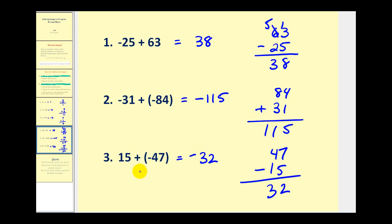So that's how you can add integers using the formal rules. But again, if this seems difficult, you may want to watch the video on using the number line to add integers, as well as using the money analogy. Thank you for watching.